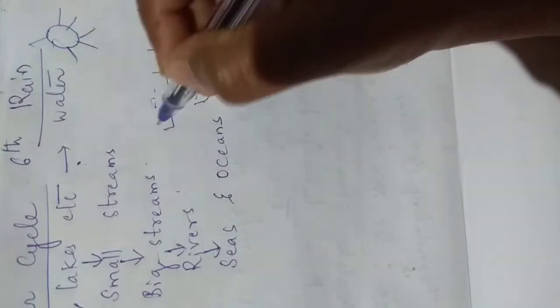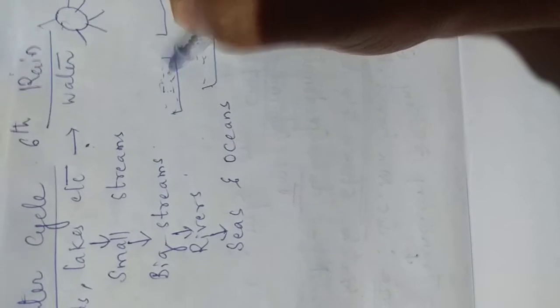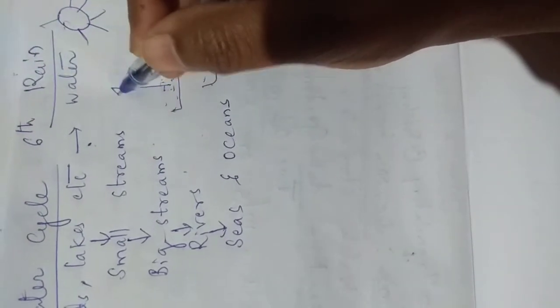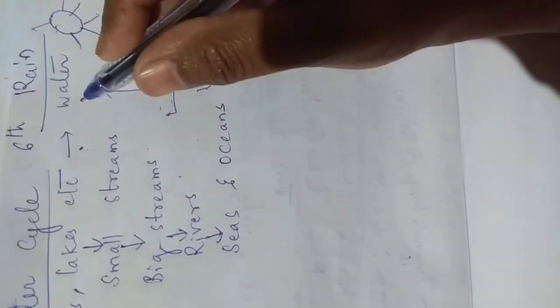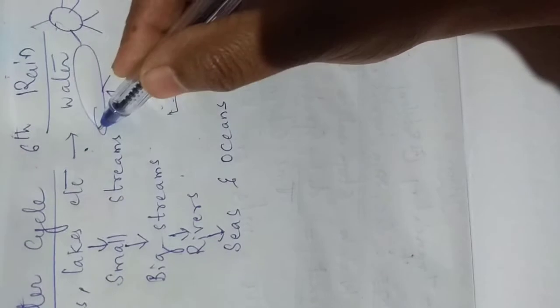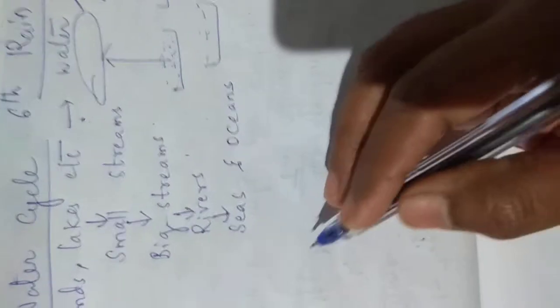And whenever sunlight is there, again due to that sunlight, water bodies or the places where there is water will be heated up. And water converts into vapour. It again forms clouds. So what is water cycle?